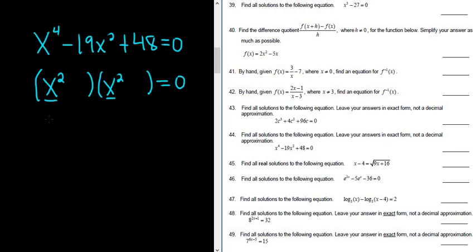Now we need two numbers that multiply to 48 and add to negative 19. Wow, that's kind of tough. What multiplies to 48? So 4 times 12, that's 48, but I don't think it's going to give us negative 19.